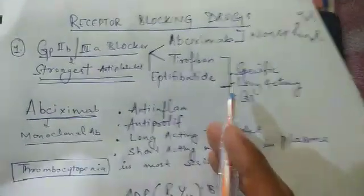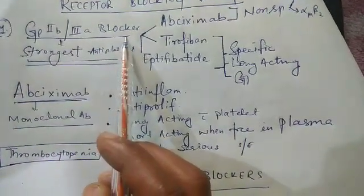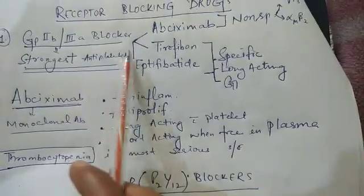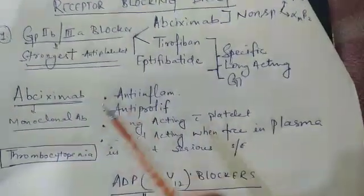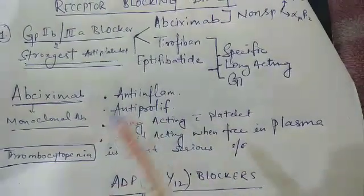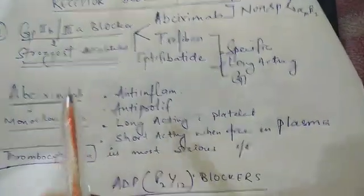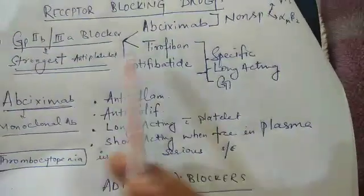Because of this, there is increased PGI2, which is prostacycline, and the effect is antiplatelet. After the enzymes, we now discuss the receptor blocking antiplatelet drugs. The first receptor is glycoprotein IIb/IIIa receptor blockers. These drugs are the strongest antiplatelet drugs since this receptor is present on the platelet, and when it gets blocked, no substance like ADP or thromboxane can aggregate the platelet.